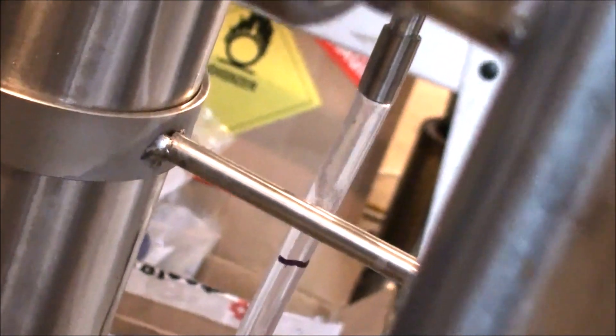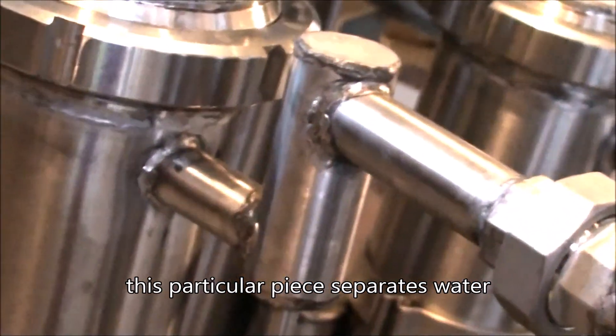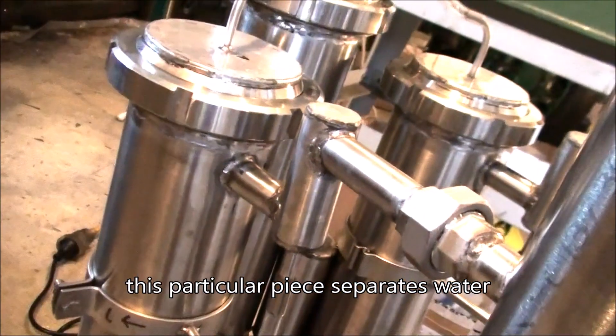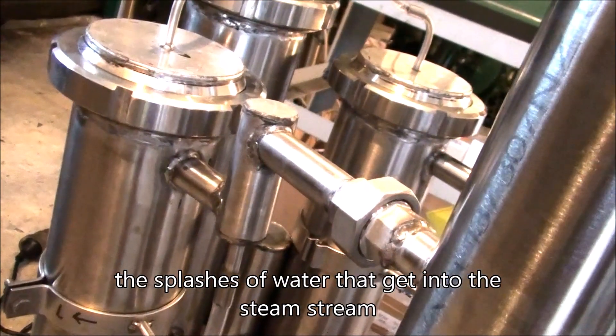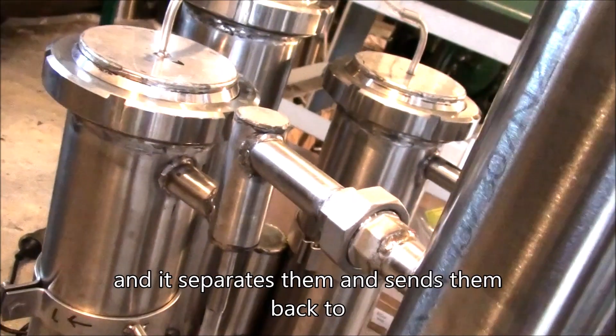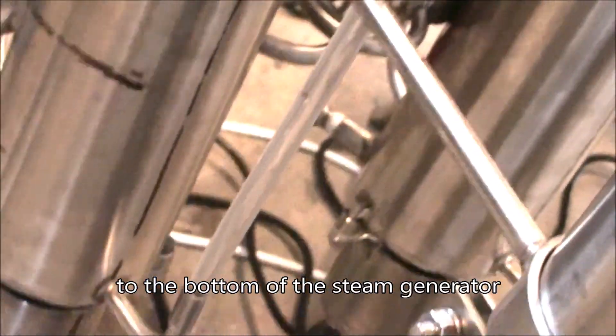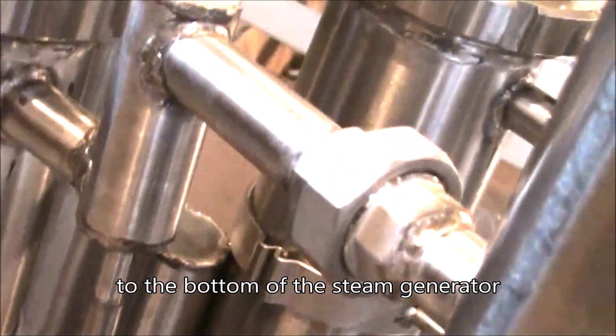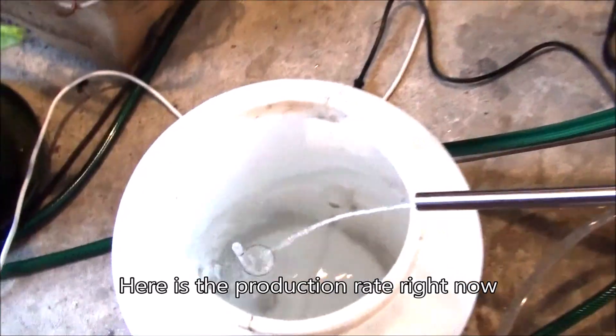This particular piece actually separates the water splashes that get into the steam stream. It separates them and sends the water back to the bottom of the steam generator, and the water-free steam goes into the column. Here's the production rate.